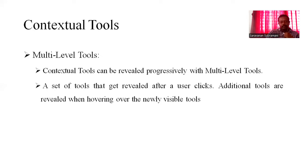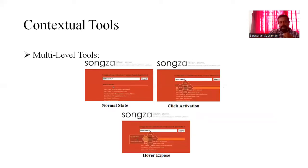The multi-level tool is a contextual tool that can progressively reveal actions. A set of tools gets revealed after a user clicks, and additional tools are revealed when hovering over the newly visible tools. An example shows the normal stages: click activation and hover expose how it works.